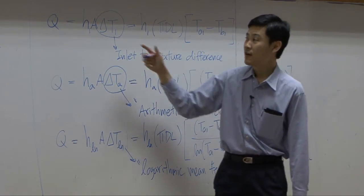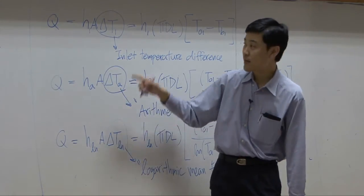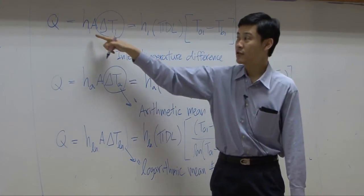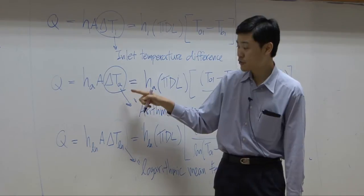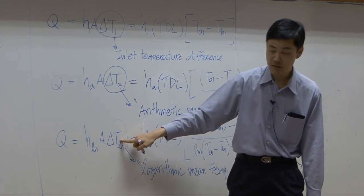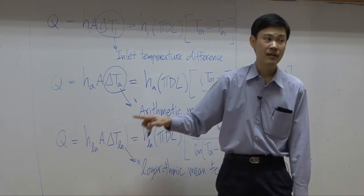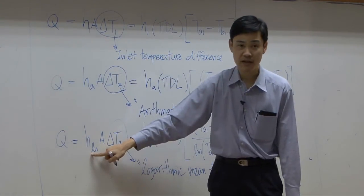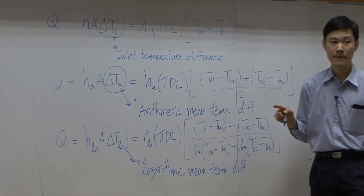So therefore, since A here are the same, if you choose delta T log mean, this one's supposed to be h log mean. The formula for calculation of h1 and h log mean are different.